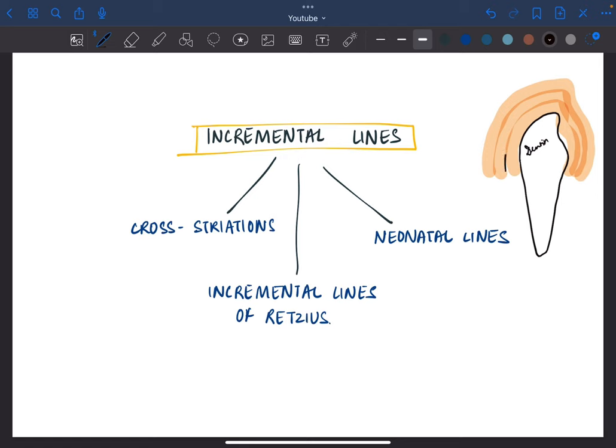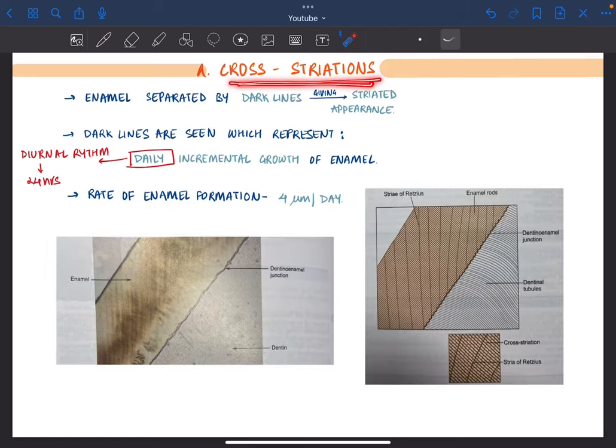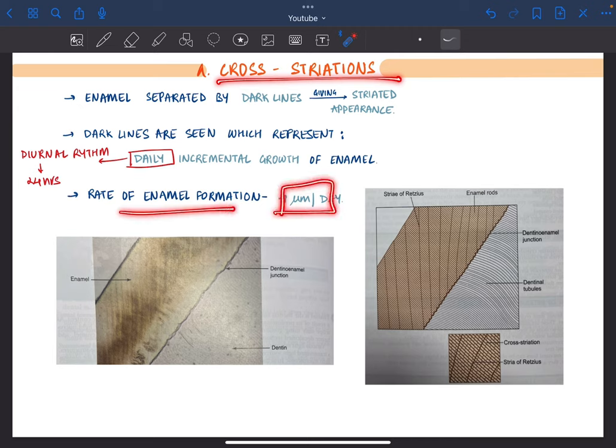Cross-striations are dark lines which give a striated or striped appearance to enamel. These represent the daily incremental growth of enamel. Every 24 hours, the amount of enamel deposited is represented by cross-striations, and the rate of formation of enamel is 4 micrometers per day.